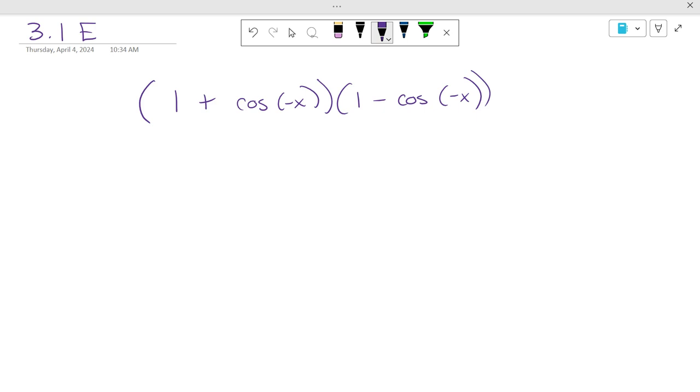Foil, exactly. But we get rid of our negatives first. Now, what's a cosine of negative x? Cosine of x. So it's 1 plus cosine of x, 1 minus cosine of x.